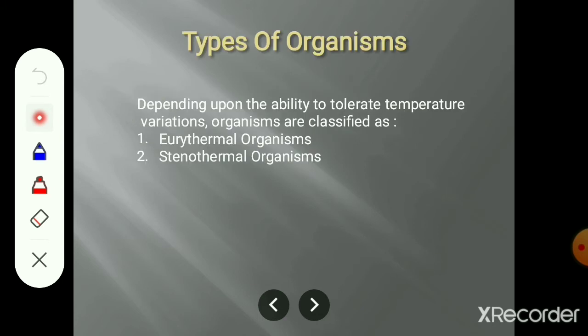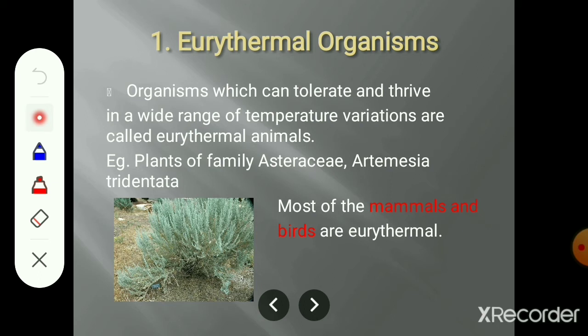Let's study about the types of organisms depending upon the ability to tolerate temperature variation. These are eurythermal organisms as well as stenothermal organisms. Eurythermal organisms are those which can tolerate a wide range of temperature variation and can survive across different temperature conditions.